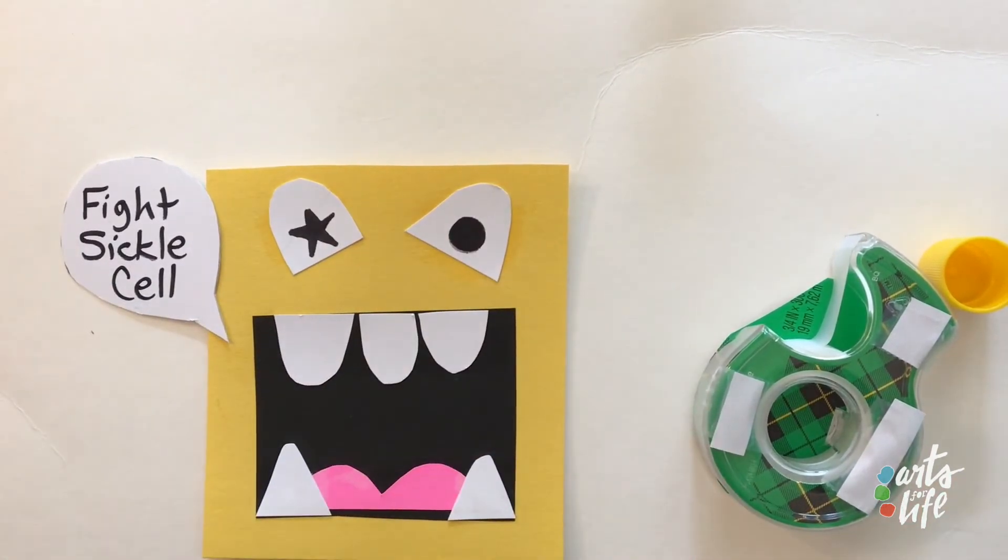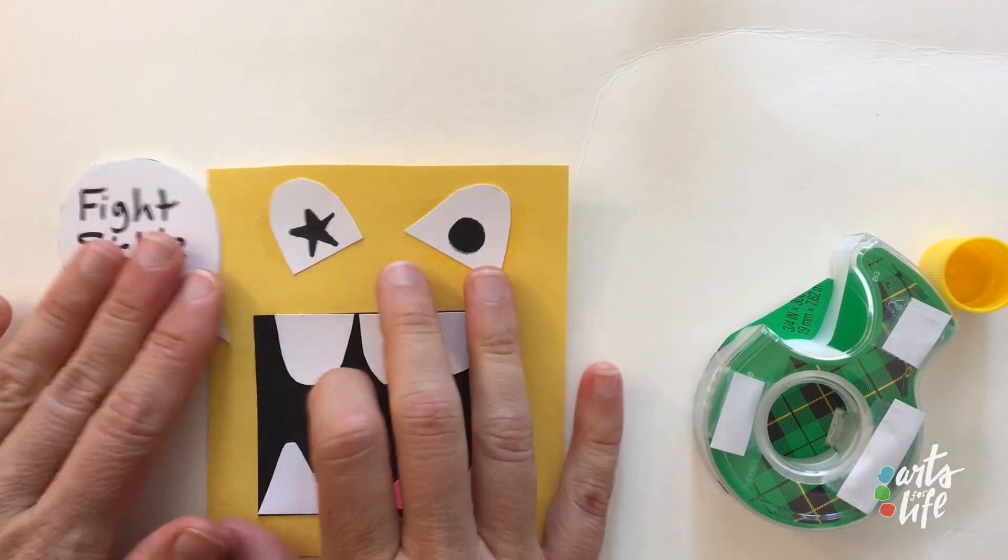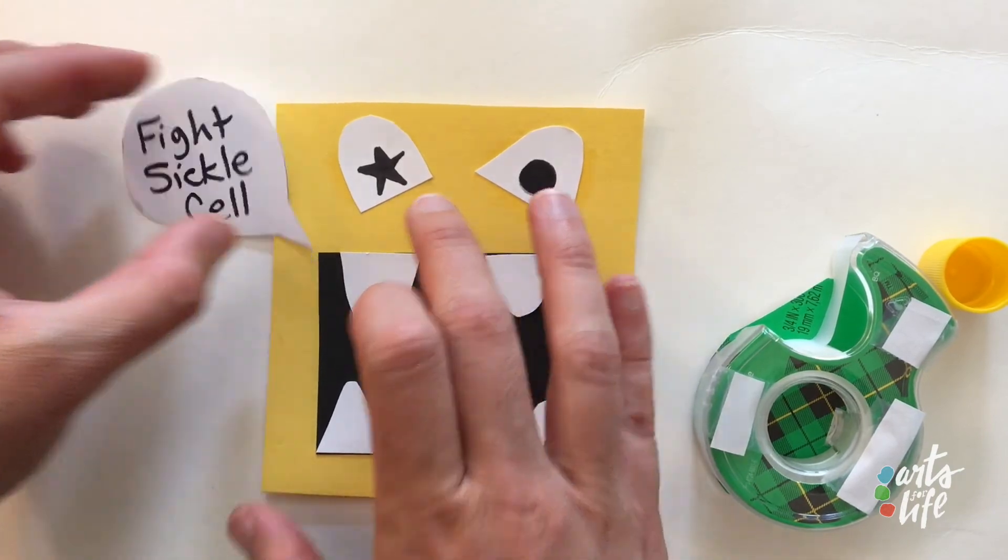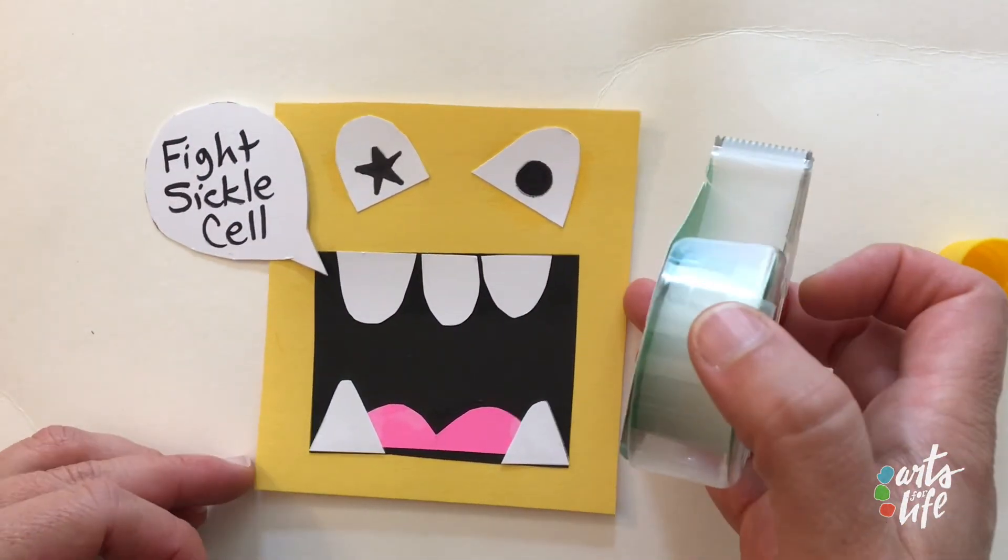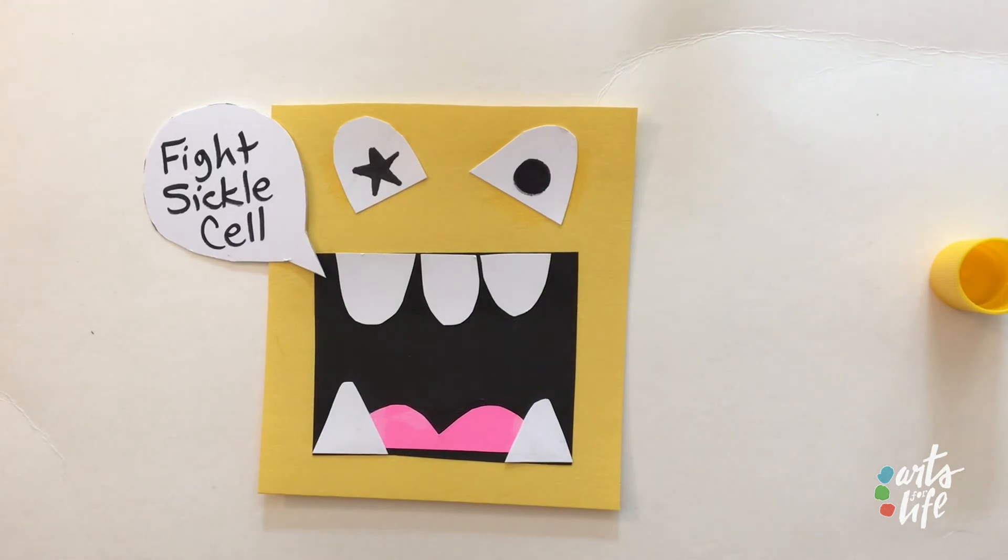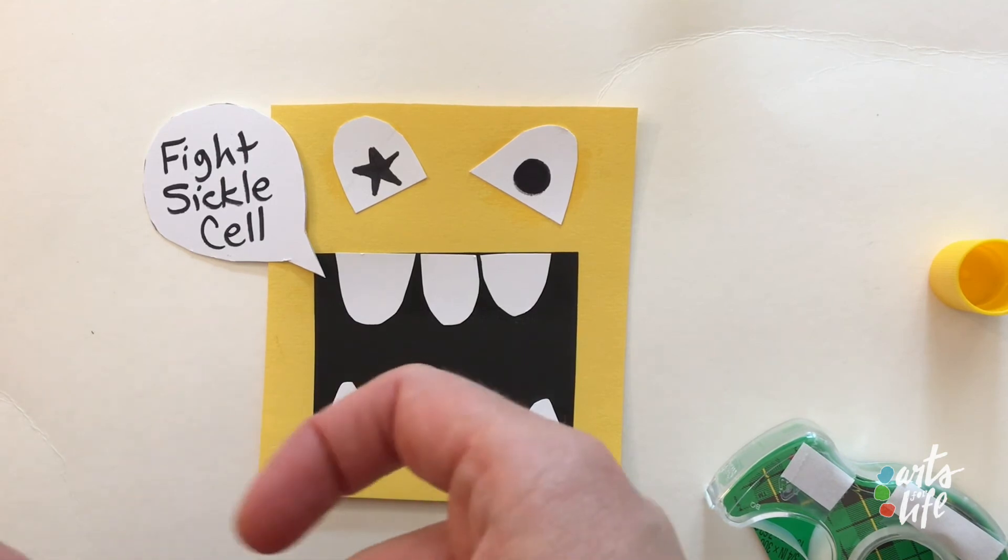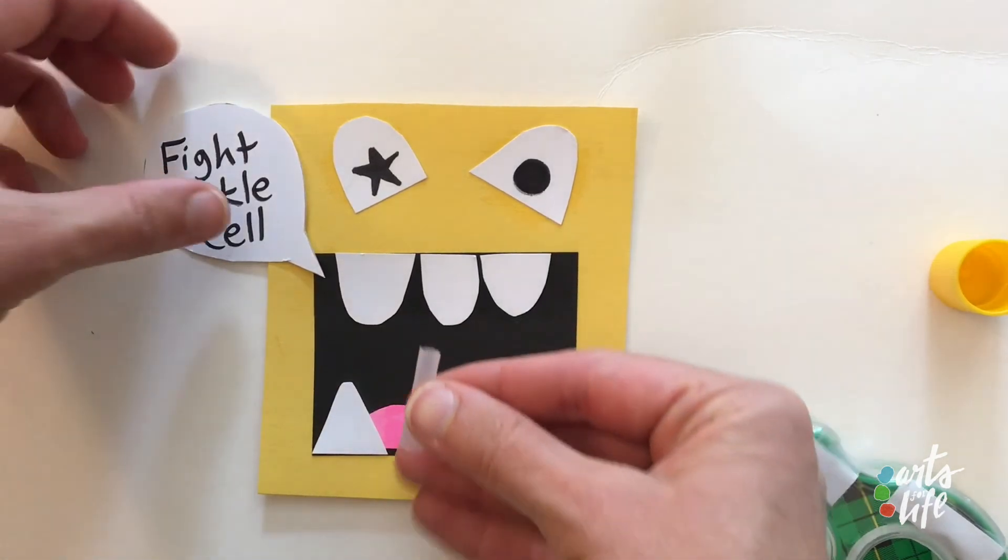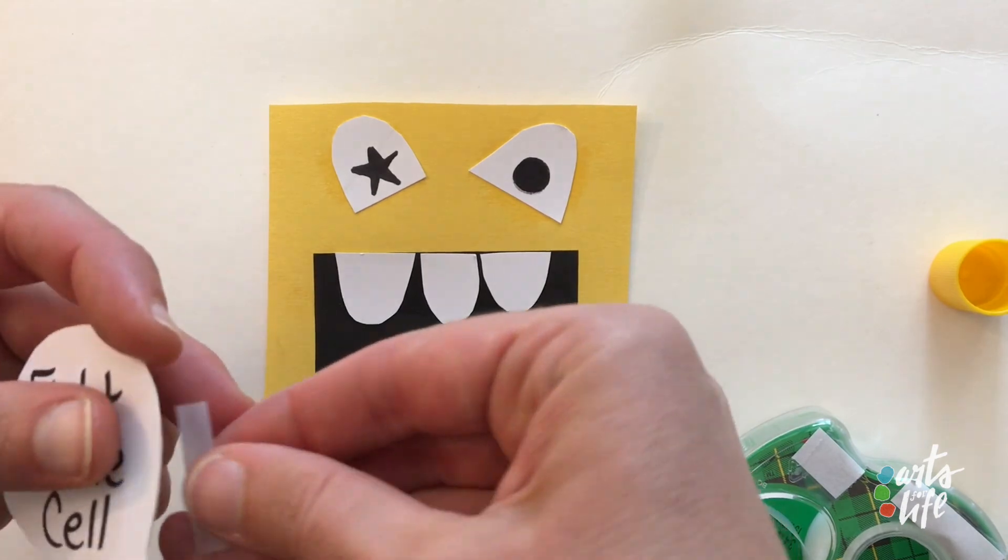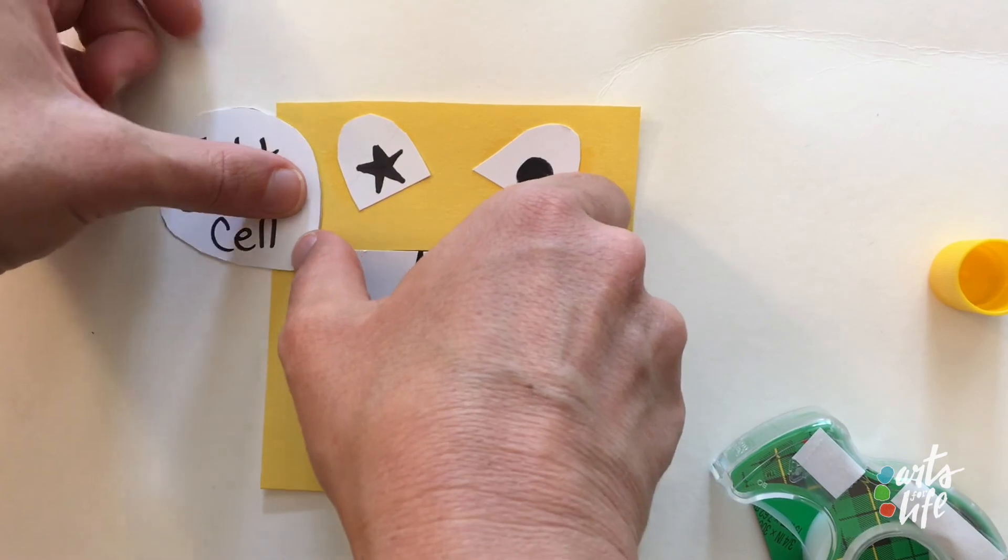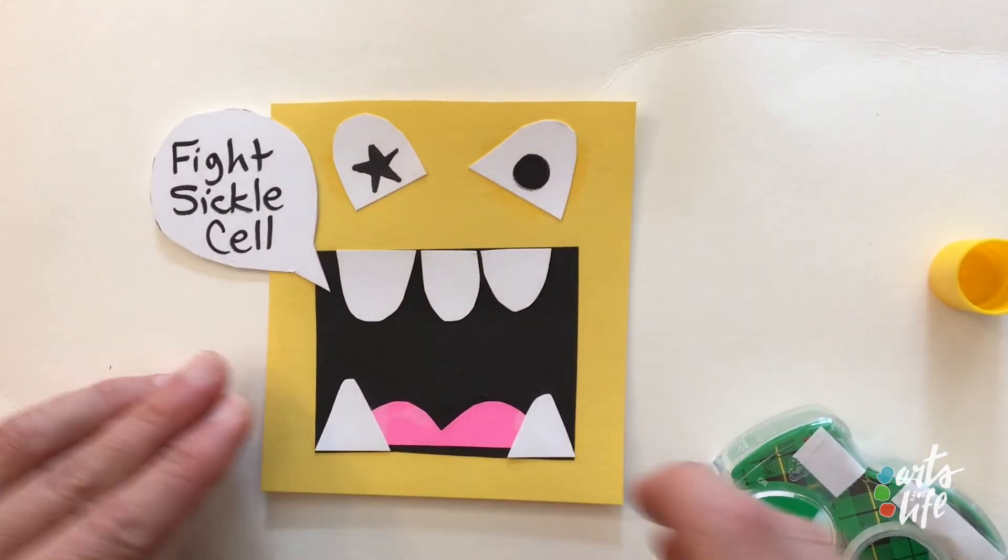Sickle cell is a disease that some kids have that they have to take really extra good care of themselves and see a doctor. And some of our kids that are in the hospital, maybe you live with sickle cell. And it just is something that people fight very hard to try to live a normal life with. So I just wanted my monster to say, hey, let's get on top of this. Let's do our best. And let's remember the people that have sickle cell. You could ask an adult about it or look it up on the internet if you don't know about it.